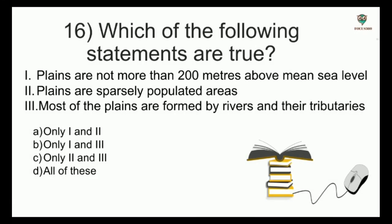Which of the following statements are true? Statement 1: plains are not more than 200 meters above mean sea level. Statement 2: plains are sparsely populated areas. Statement 3: most of the plains are formed by rivers and their tributaries. Options: only 1 and 2, only 1 and 3, only 2 and 3, all of these — and the answer is only 1 and 3. That means plains are not sparsely populated areas; they are densely populated areas.